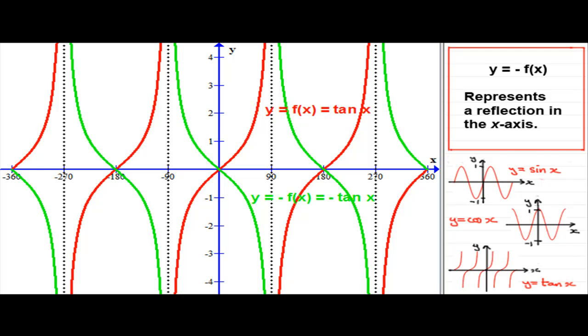Okay, well I hope that's given you an idea of how this transformation—y equals minus f of x—works for these trig graphs. It represents a reflection in the x-axis.